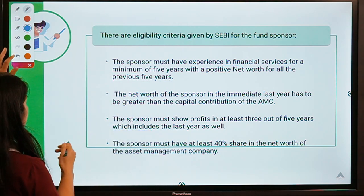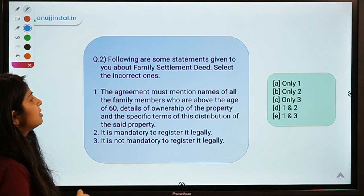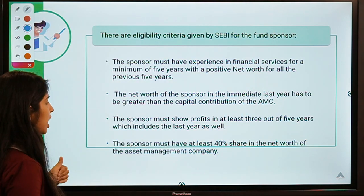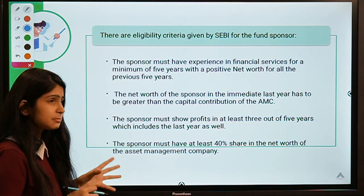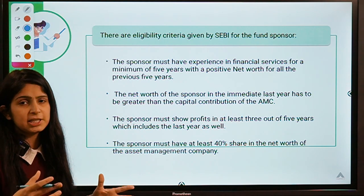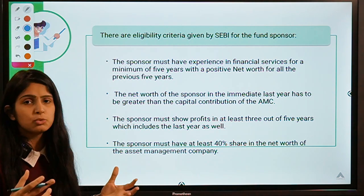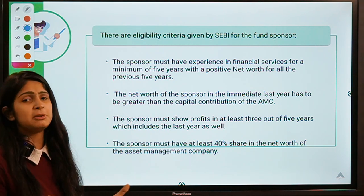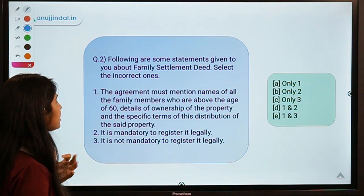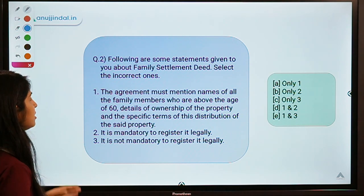Moving ahead to the second question, which talks about something called the Family Settlement Deal. Before moving ahead, a quick note: the term 'sponsor' has been in news in relation to an acquisition deal being published in newspapers — read Mint and let me know which deal that is in the comments. Now, here is the second question: three statements are given and you have to identify the correct ones regarding a family settlement deed.